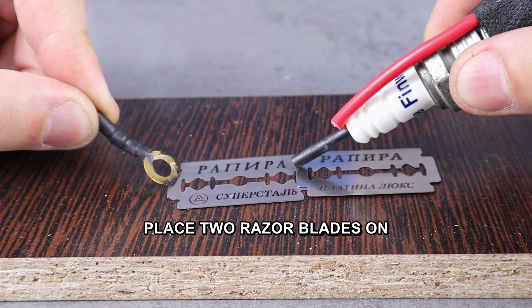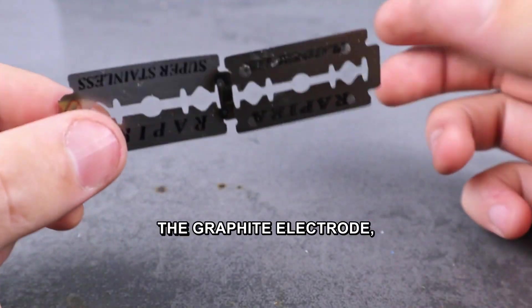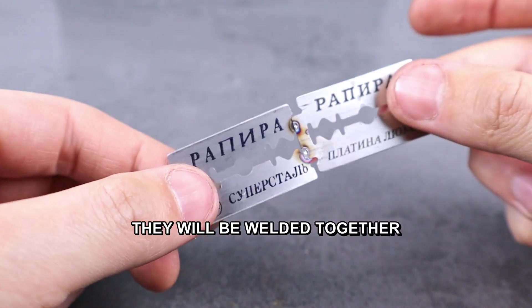Place two razor blades on top of each other. Press the negative wire to the bottom blade and touch the top one with the graphite electrode. They will be welded together.